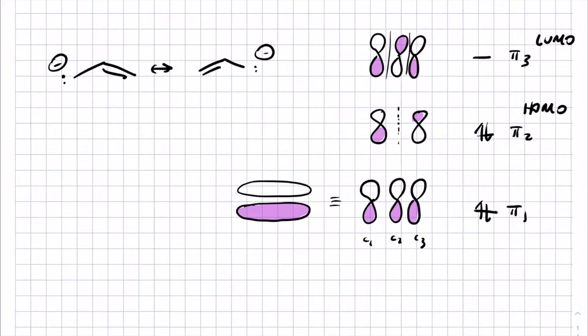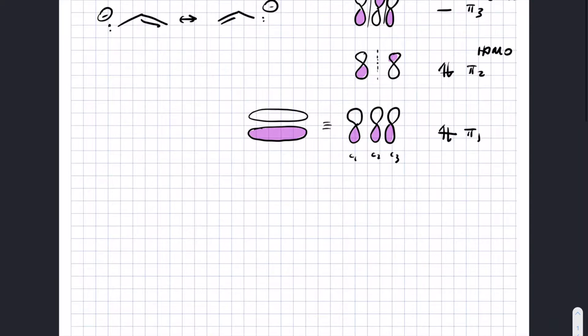You rank orbitals in energy by counting the nodes, recalling that the more nodes an orbital has, the higher in energy it is. So let me give you a new situation — maybe related to an exam question I've asked before. Let's put lone pairs on that atom and number these one, two, three, four, and five.